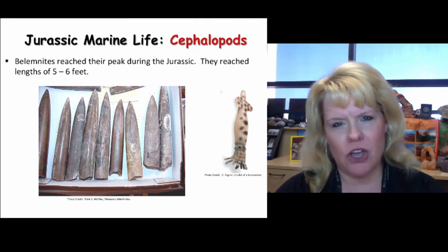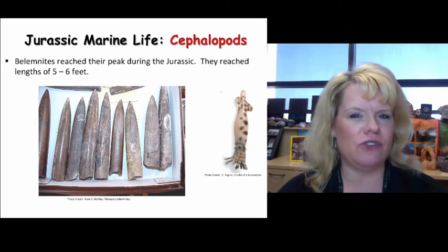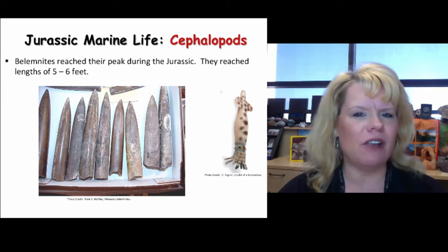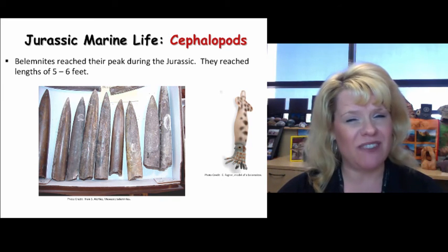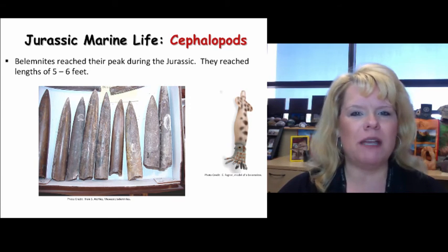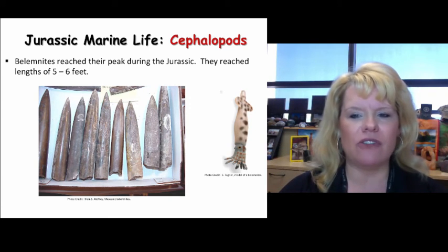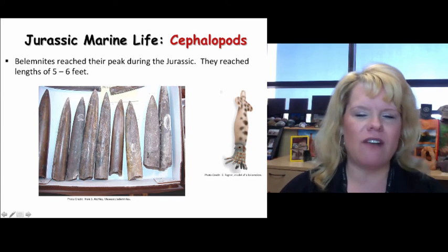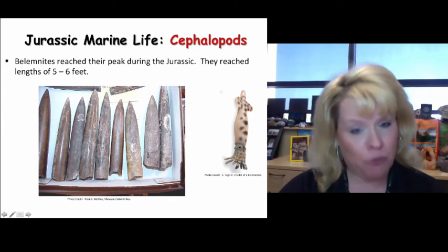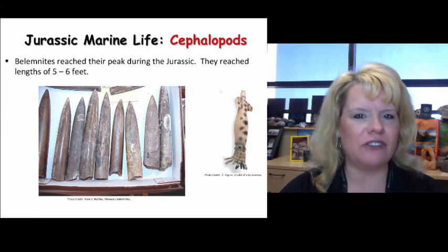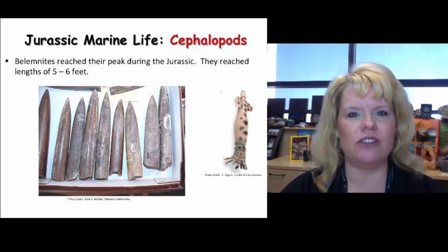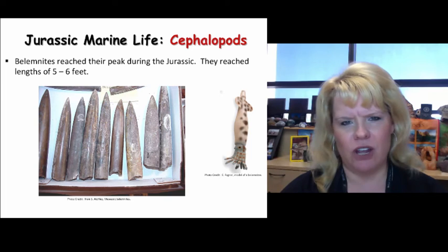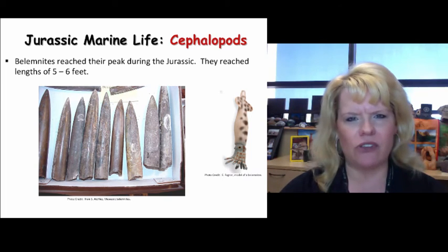Cephalopods are going to radiate in a huge way during the Jurassic and the Cretaceous periods. But belemnites are non-coiling cephalopods, and they reached up to five and six feet long. They look like big giant bullets, but they had a squid hanging out at the end. Imagine that on a five to six foot scale, swimming as a predator through the ocean. The largest of these lived during the Jurassic period, specifically once the Zuni had started transgressing during the middle and late Jurassic.